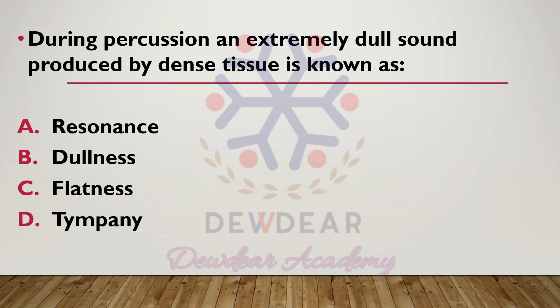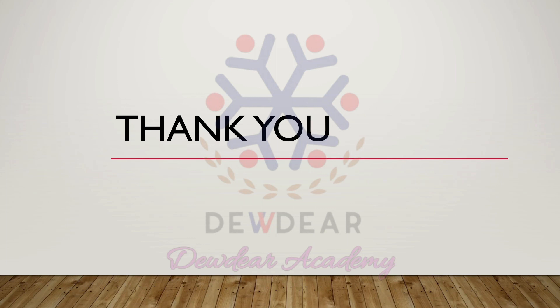During percussion, an extremely dull sound produced by dense tissue is known as: options resonance, dullness, flatness, or tympani. The correct answer is option C — flatness. During percussion, the extremely dull sound produced by dense tissue is known as flatness.